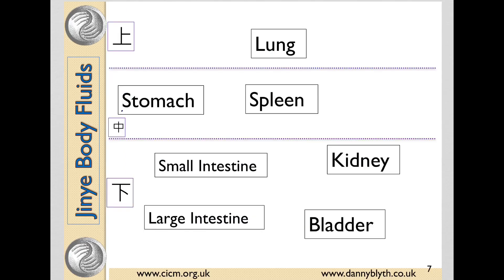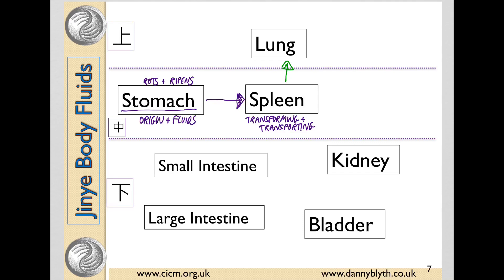Food enters the stomach, which is said to be the origin of fluids, and they are transferred to the spleen, which is in charge of transforming and transporting. The spleen sends the clear up to the lungs and the turbid down to the small intestine, under the influence of the descending stomach Qi.